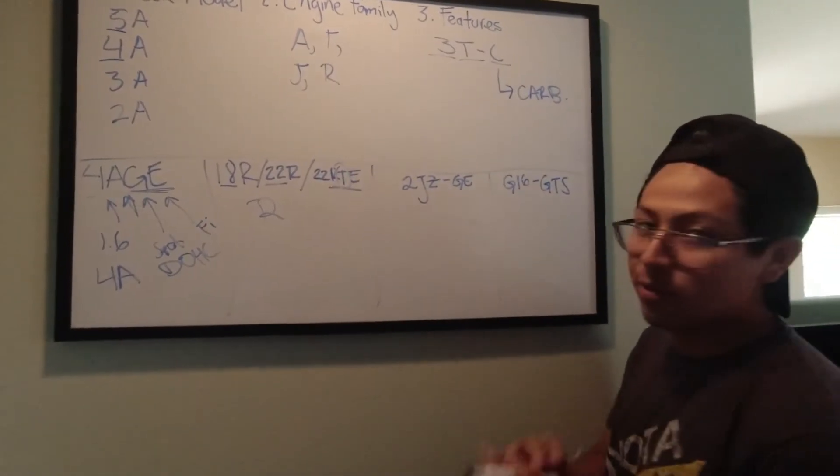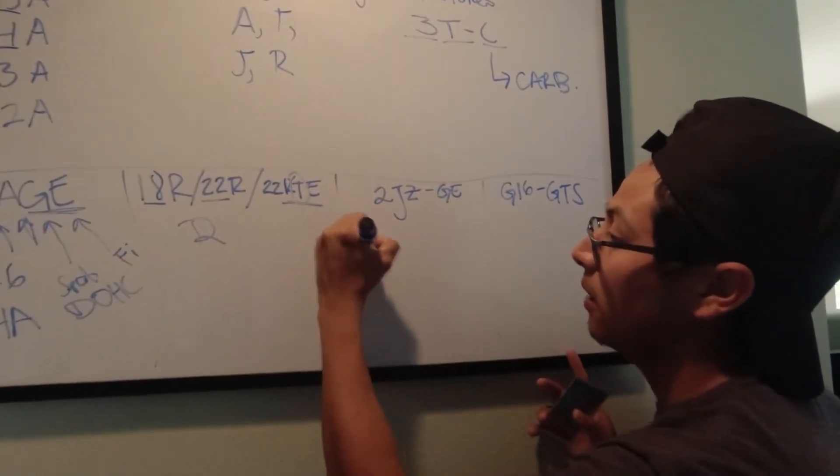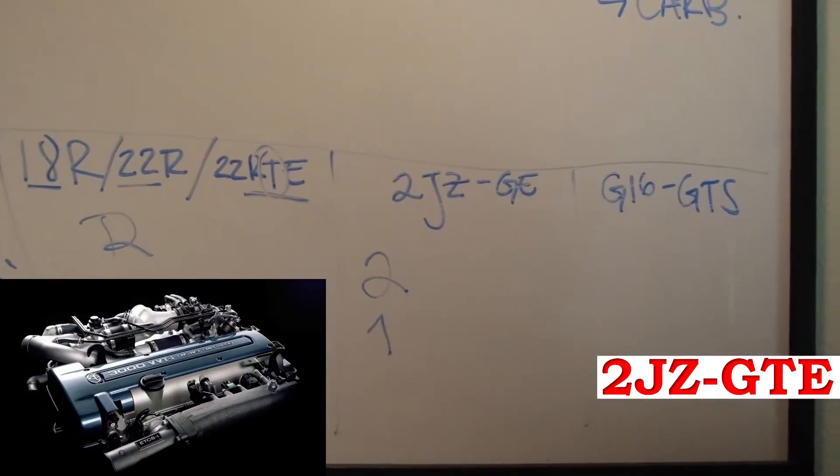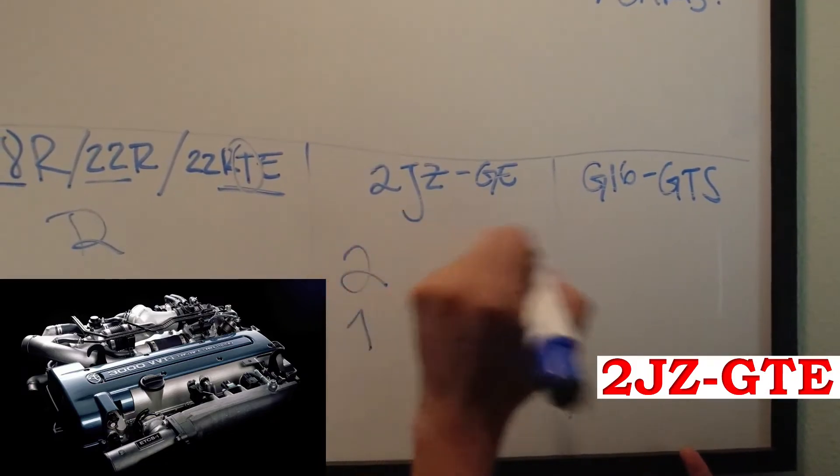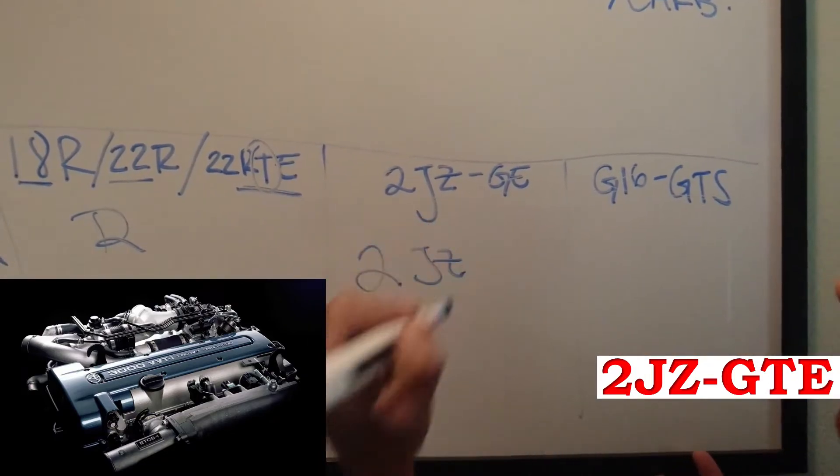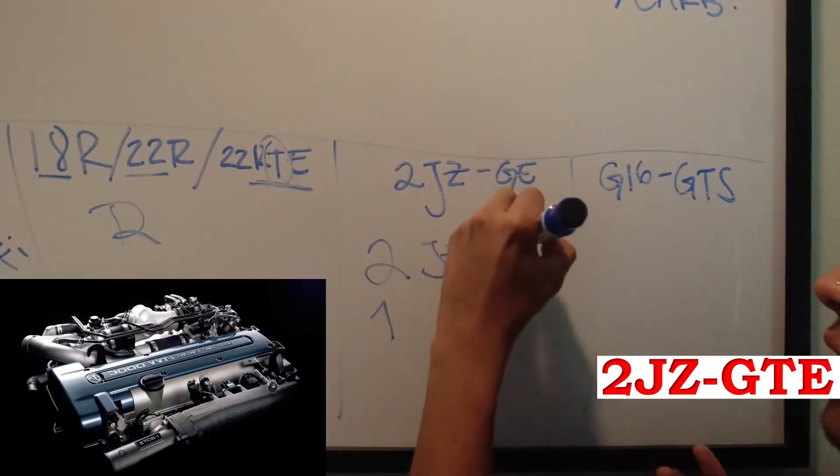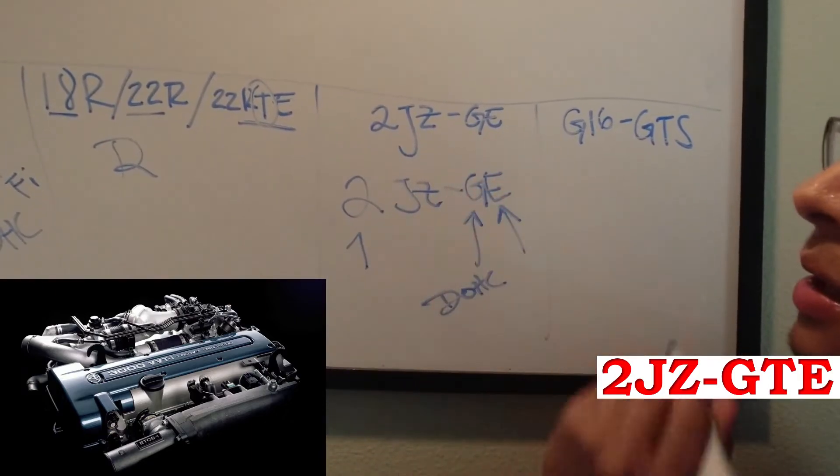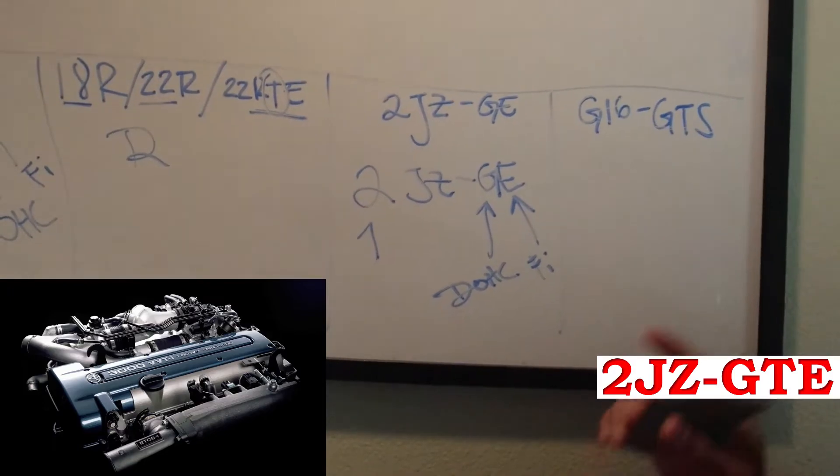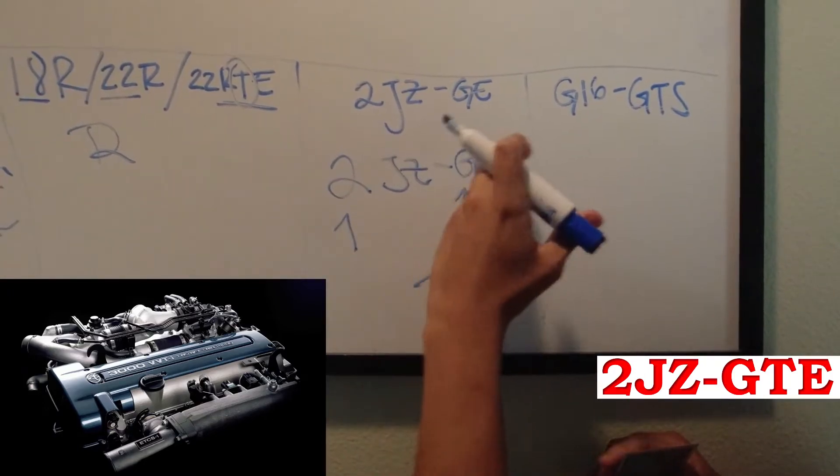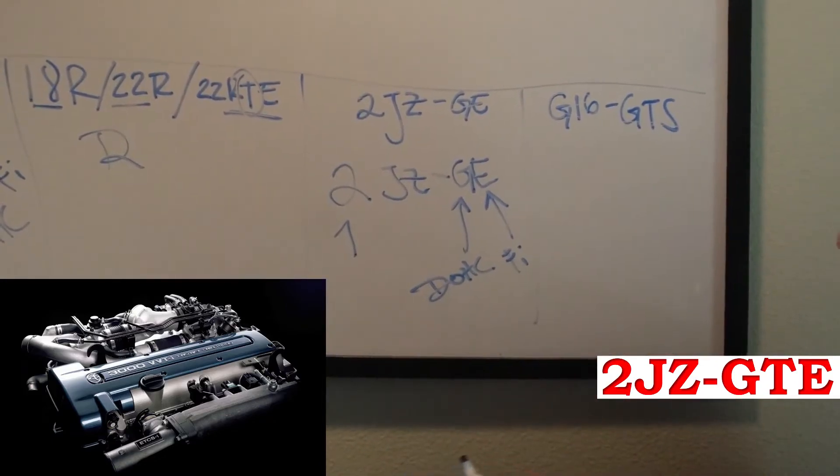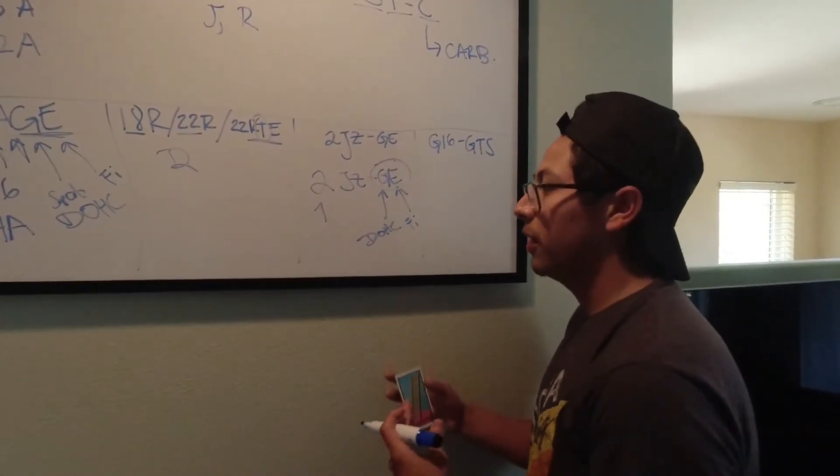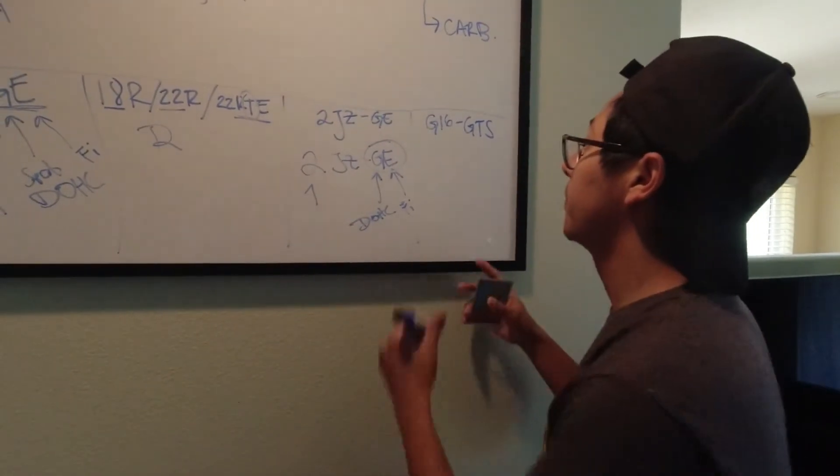And then you have over here the famous 2JZGE. Follows the same pattern. The 2 is going to be your block model. That's why there's a 1JZ and a 2JZ. It's a new revision in the block. And then you have JZ is going to be that family engine. And then you have GE, which GE will mean, as we learned, this one is dual overhead cam. And E will be fuel injected. Now, there's also, as we all know, there's a 2JZGTE, there's a 2JZFE, and all sorts of variations. So, depending on what these features are, is how you know what kind of engine you get. Some of them have VVTI, some of them don't. Things like that varies the name.